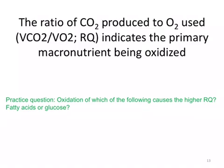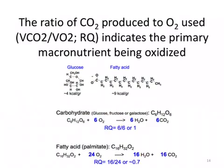Practice question: Oxidation of which of the following causes the higher RQ — fatty acids or glucose? Recall that glucose, like all carbohydrates, is already partially oxidized — there's an oxygen bound to each carbon. Whereas for fatty acids, the carbons are largely completely reduced. That gives fatty acids more energy per gram — more kilocalories per gram — because fully reduced carbons release more energy when oxidized compared to partially oxidized carbons.